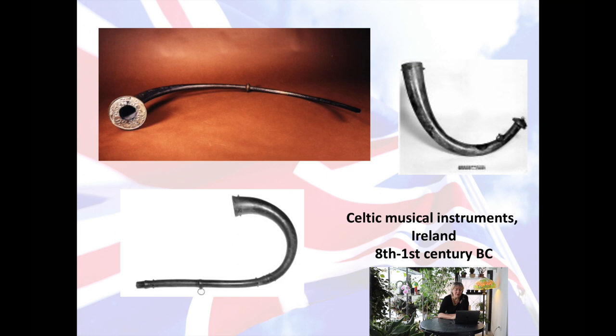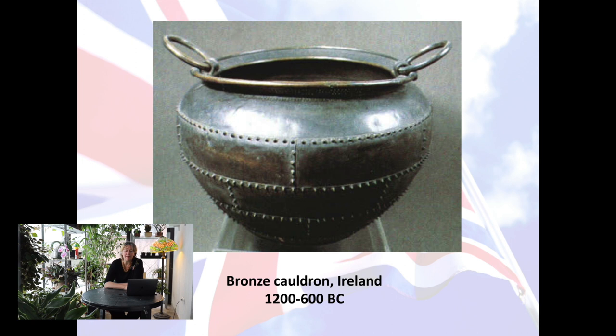Some other elements of Celtic culture that are very widespread throughout the Celtic lands — and once again, this includes Ireland and parts of western France, especially Brittany — are types of objects that repeat, like musical instruments. Here we have some musical instruments, usually kinds of horns to be blown, found in Ireland, and also cauldrons — big ceremonial vessels. Some archaeologists believe these were used for religious ceremonies to actually brew hallucinogenic potions that members of the community would take.